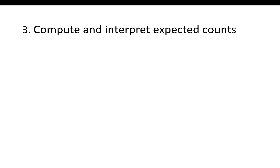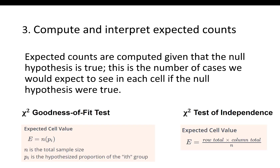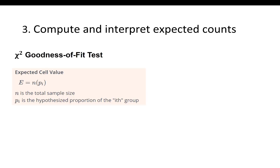Our third learning objective is to compute and interpret expected counts. Both the goodness of fit test and the test of independence involve expected counts, computed given that the null hypothesis is true. This is the number of cases we would expect to see in each cell if the null hypothesis were true. The formulas are different for the goodness of fit test and the test of independence. The formula for the goodness of fit test is n times p sub i, where n is the total sample size and p sub i is the hypothesized proportion for the i-th group.